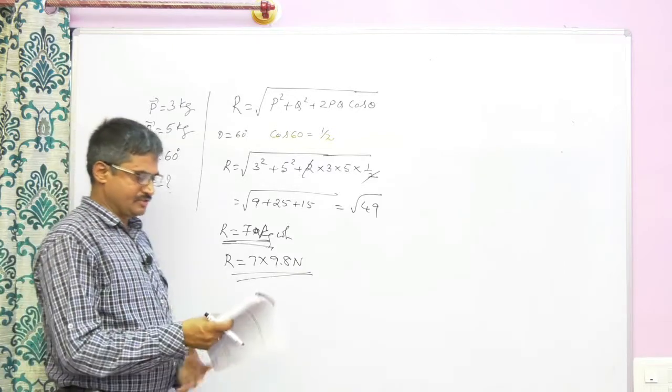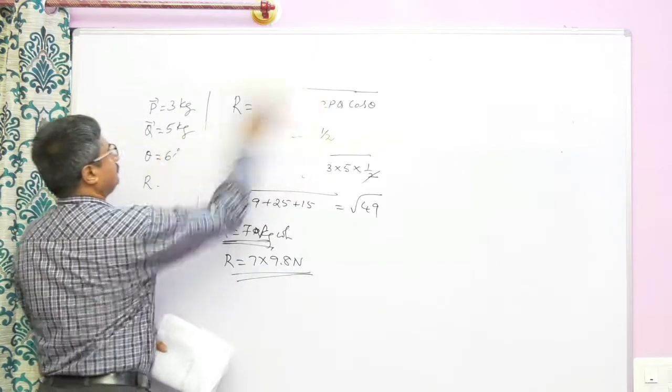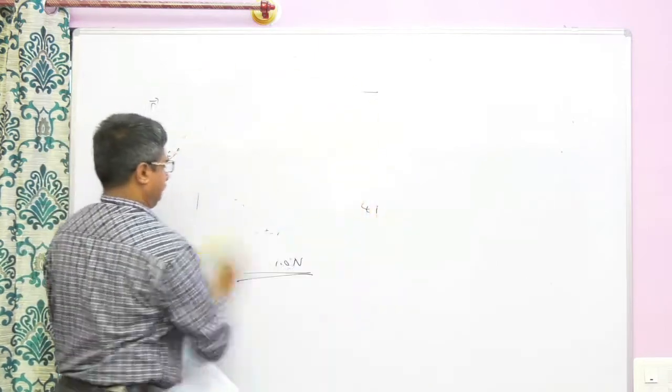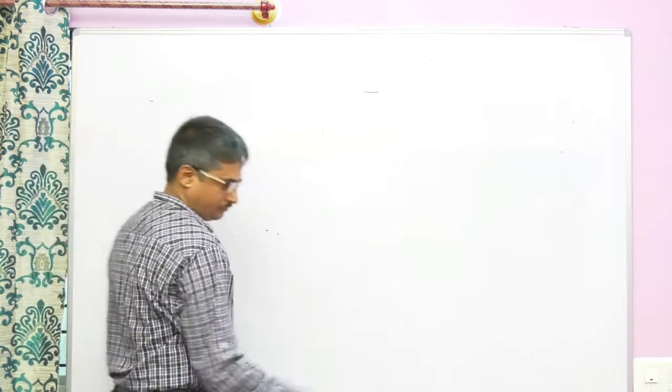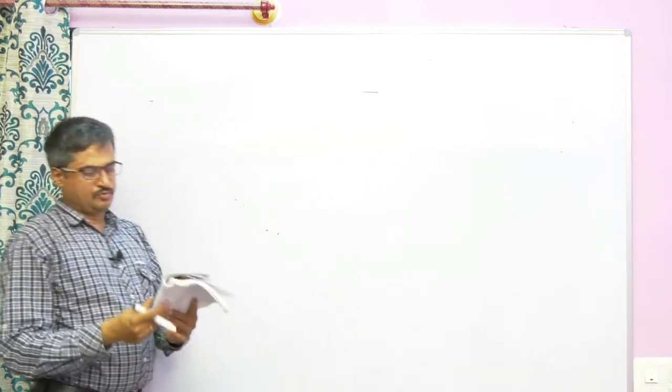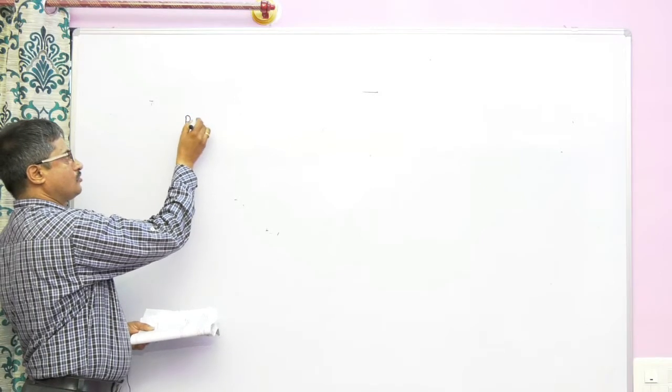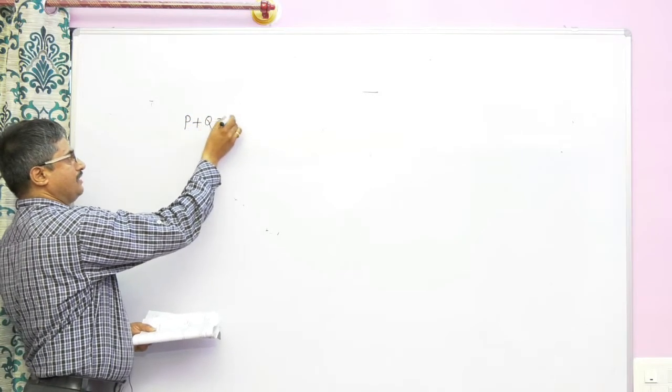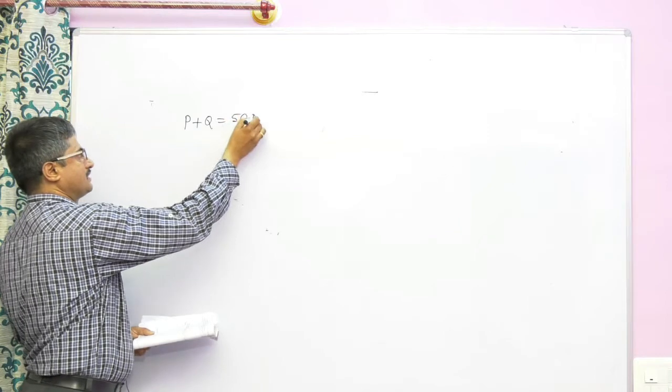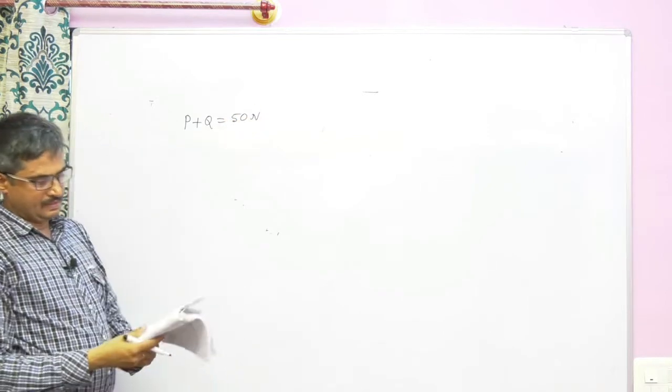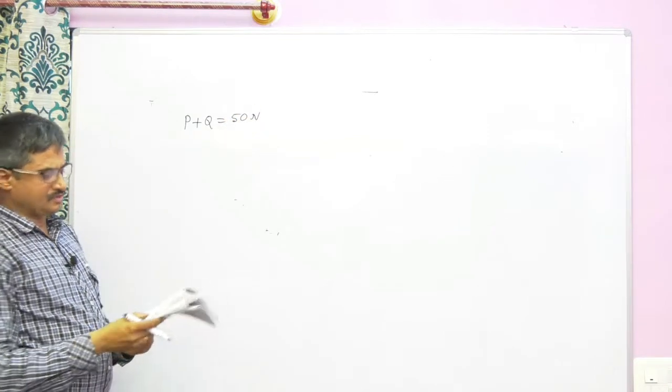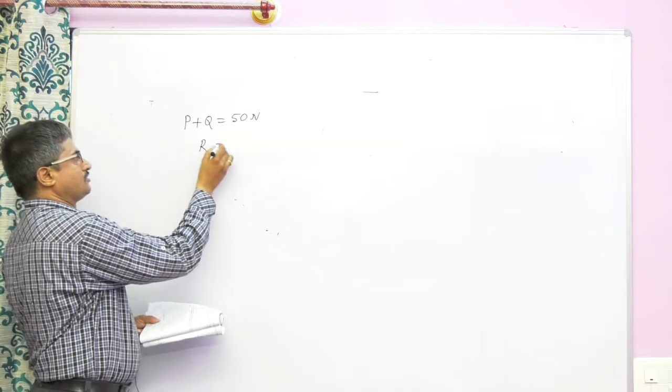The second problem is sum of two forces is 50 Newton, that is p plus q is 50 Newton. The resultant is 20 Newton. The resultant of the force is 20 Newton, r equals 20 Newton.